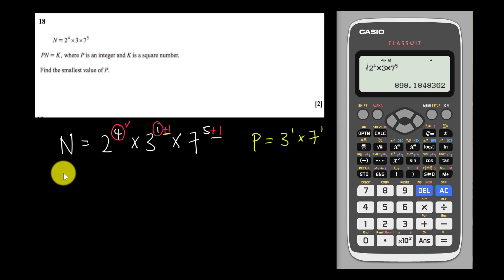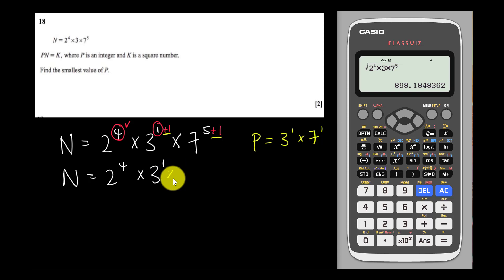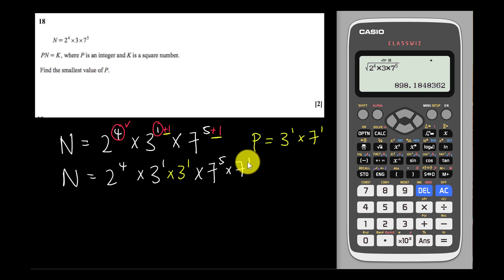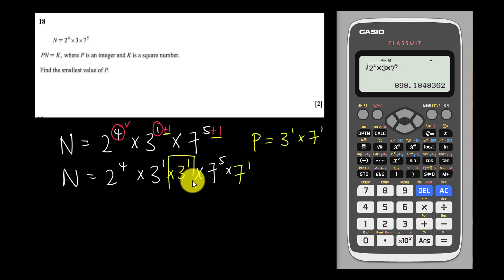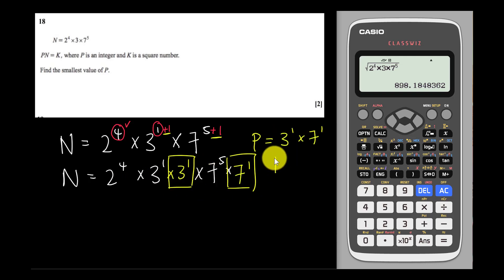Let me break it down. This is 2 to the power of 4, multiplied by 3 to the power of 1+1. Adding in the power means multiplying by 3 to the power of 1. And then 7 to the power of 5+1 means multiplying by 7 to the power of 1. The white color here is my n, and the yellow color is what I'm adding in — what I multiply into n. So p is 3 multiplied by 7, which is 21.